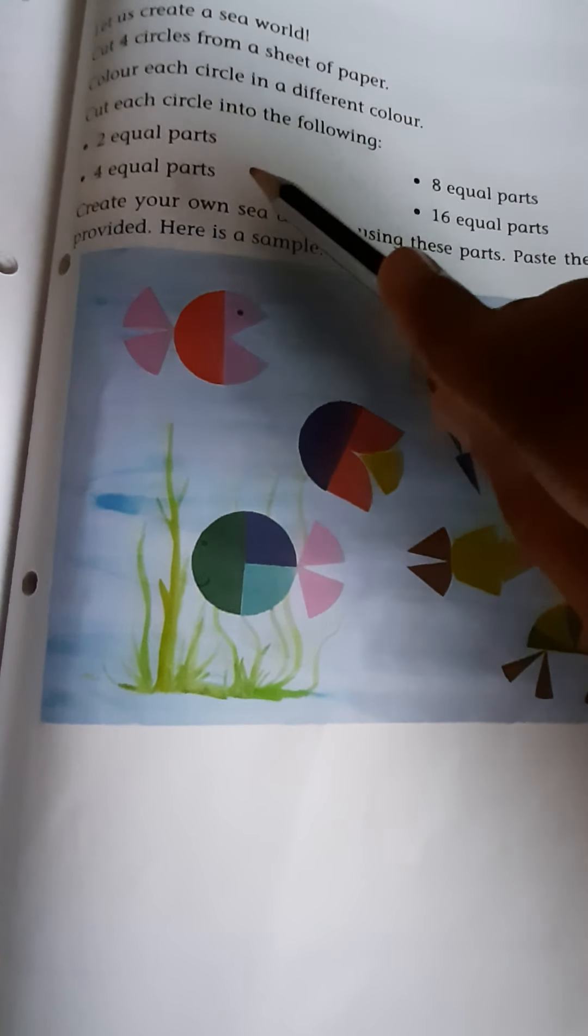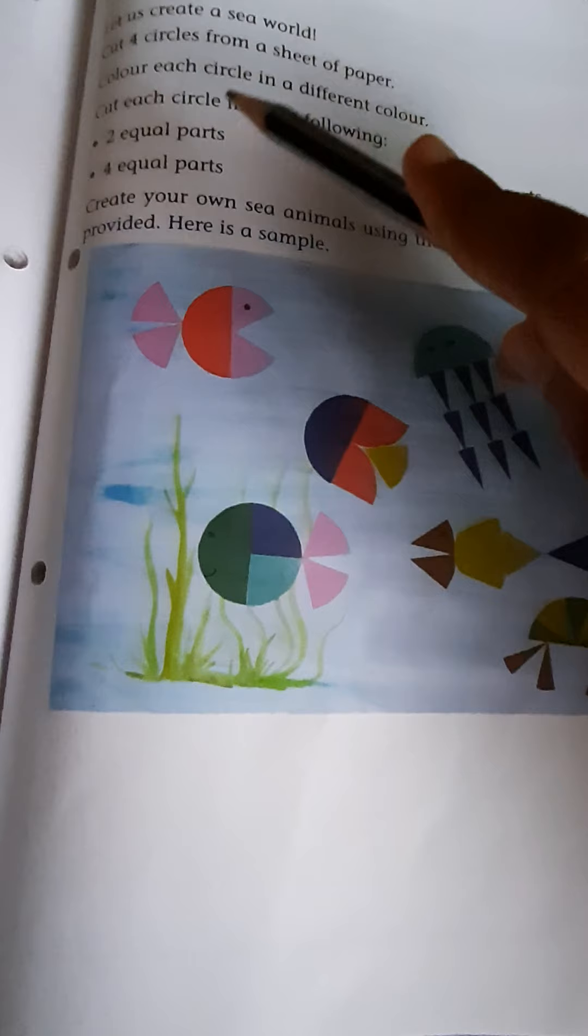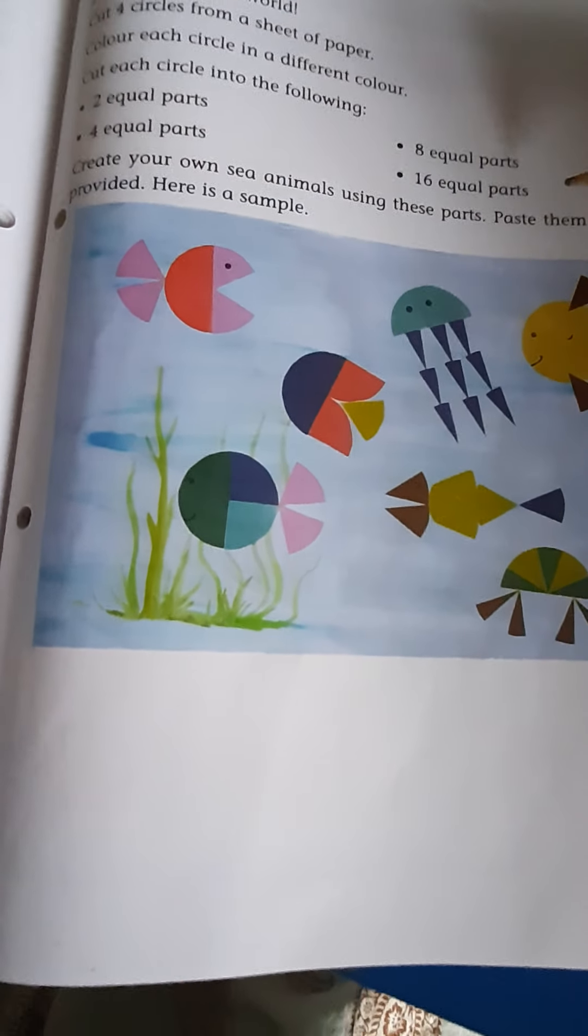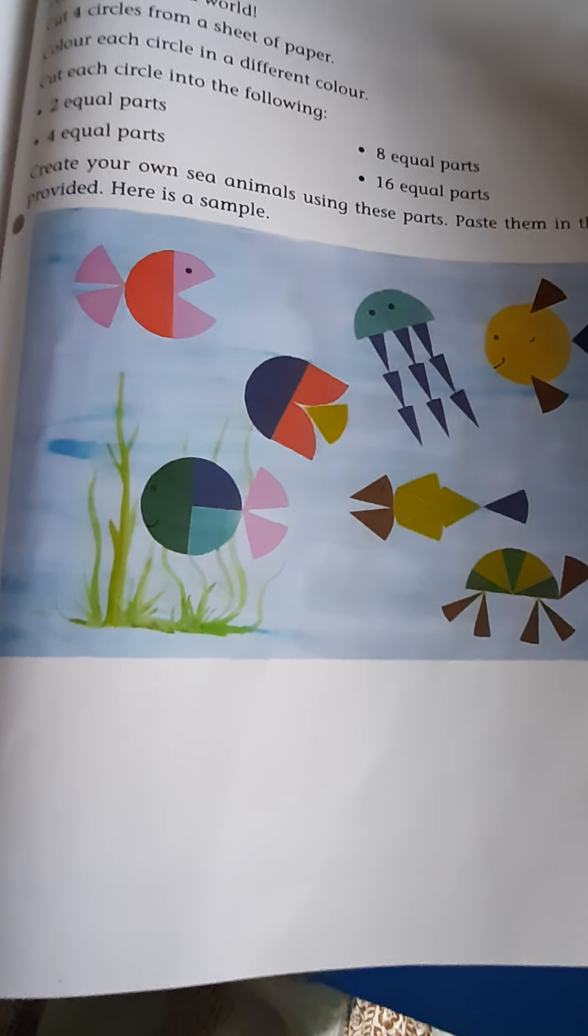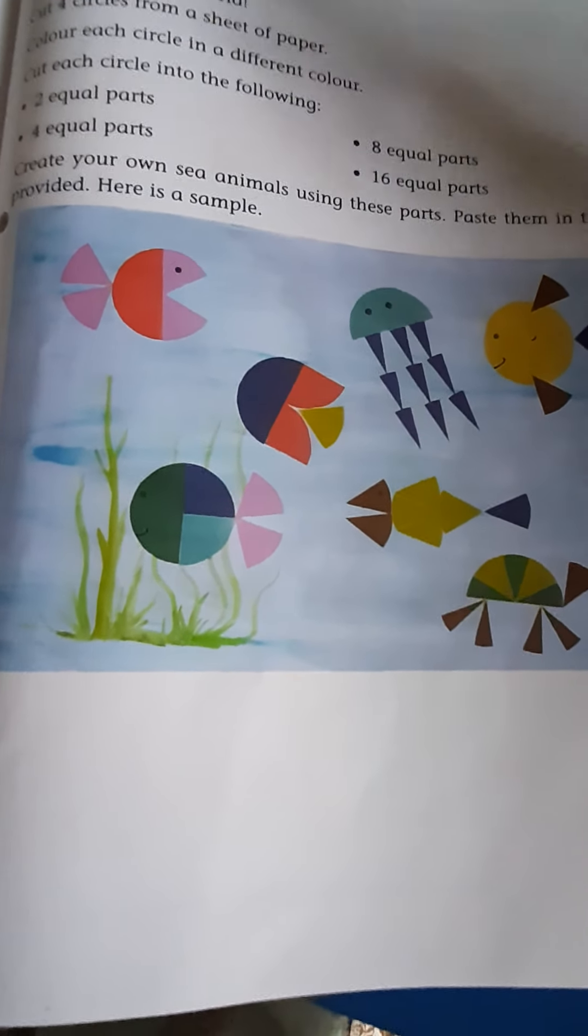And after that you have to cut each circle into first 2 parts, 4 parts, 8 parts, and 16 parts. Next create your own sea animal using these parts.